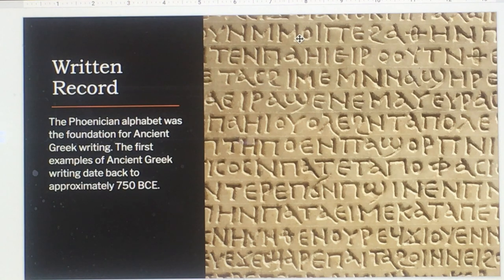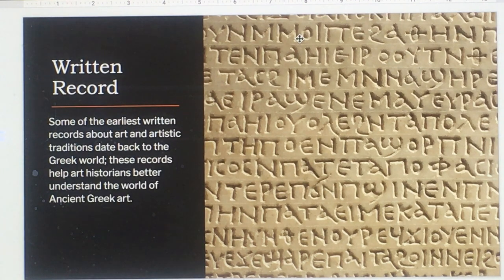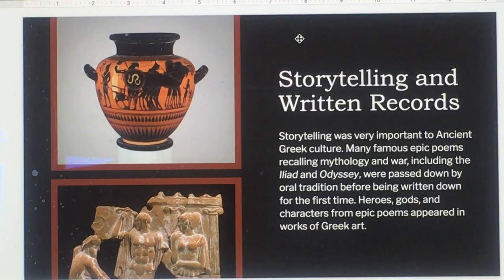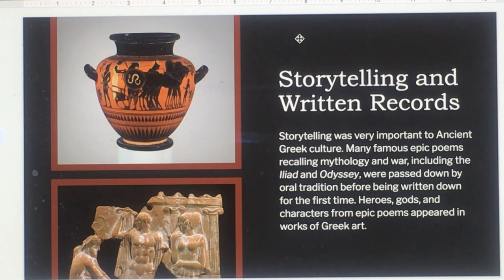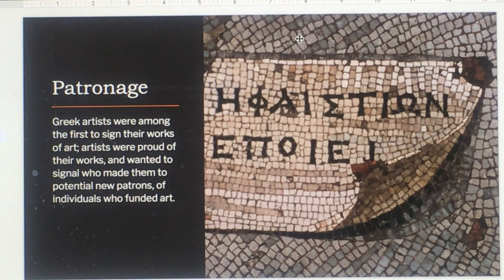The Phoenician alphabet was the foundation for ancient Greek writing. The first examples date back to approximately 750 BCE. Some of the earliest written records about art date back to the Greek world and help art historians understand ancient Greek art. Storytelling was very important — famous epic poems like the Iliad and Odyssey were passed down orally before being written. Greek artists were among the first to sign their works, signaling who made them to potential new patrons.